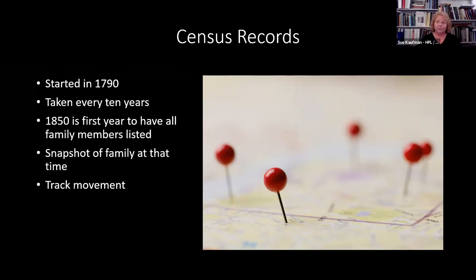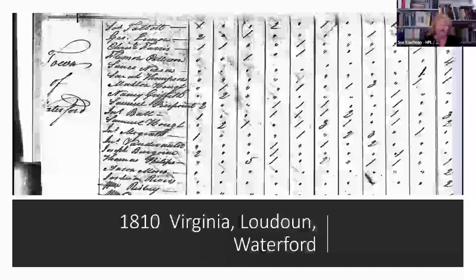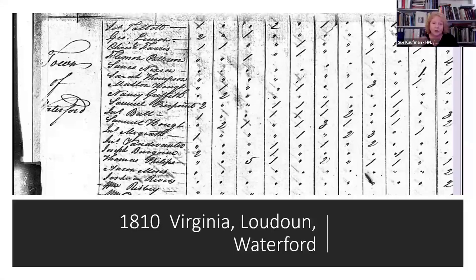One 10-year period they might be in Virginia; the next they might be in Ohio. You can see where people were born, which gives you an idea of when events happened. Each census asks different questions. The 1810 census from Virginia, Loudoun County, Waterford Township shows that 1790 to 1840 censuses only list the head of household, with everyone broken out by age, sex, and race. Columns are broken up by male and female between age ranges, and there's also a column for slaves in these censuses.